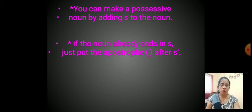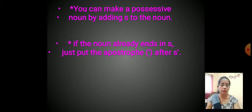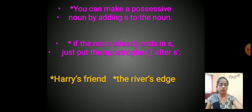You can make a possessive noun by adding apostrophe-s to the noun. If the noun already ends in s, just put the apostrophe after the s. We learned about what is meant by apostrophe in the previous chapter. That is the form of a possessive noun. For example: Harith's friend, the river's edge — that is the possessive noun.